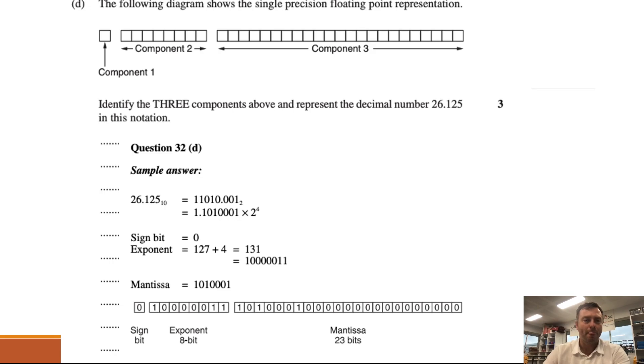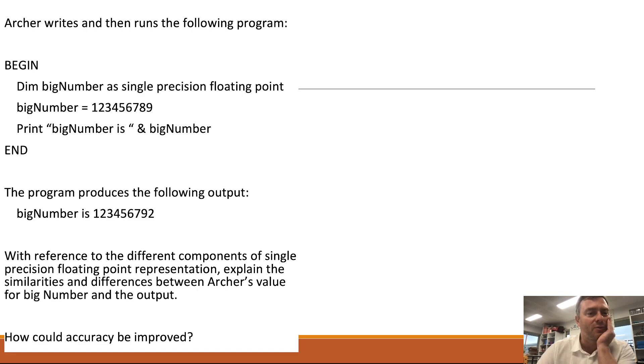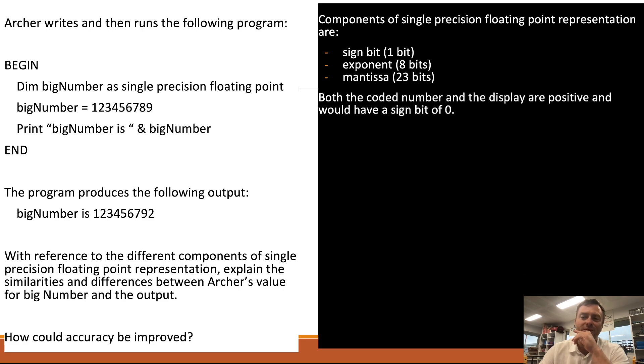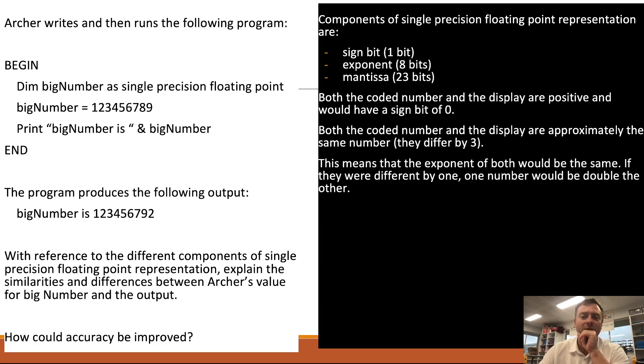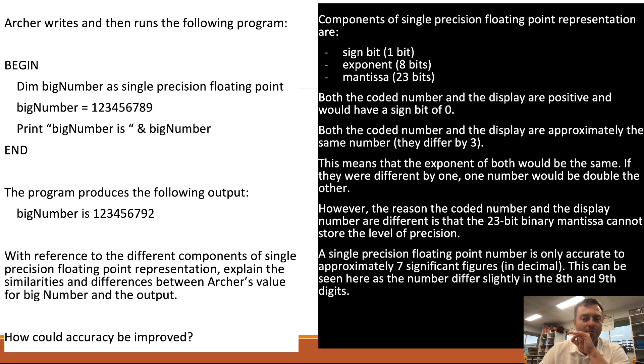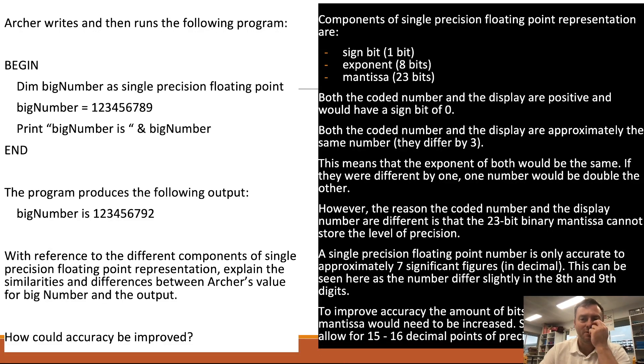And then there you go. Then we've got this little problem here. So Archer writes and then runs the following program: begin dim big number as a single precision floating point. Big number is 123456789. Print big number is have big number. And it produces that. But what you should see after the seventh decimal point it's inaccurate. We've referenced the different components of single precision floating point representation. Explain the similarities and differences between Archer's value for big number and the output. How could the accuracy be improved? Well the components, we should have a sign bit, the exponent and then the mantissa. Both coded numbers are displayed as positive but would have a sign bit of zero. Both would have a coded number and the display would be approximately the same number. However they're different by three. This means the exponent of both would be exactly the same. If they were different by one the exponent would have shifted the number. However the reason the coded number in the display is different because of the precision level, precision of a single floating point. And the way that you could fix this is by using a double and that would increase the precision.